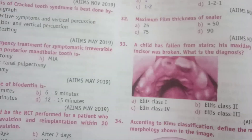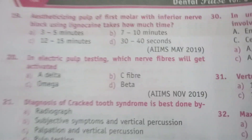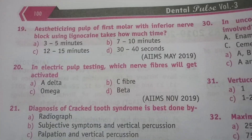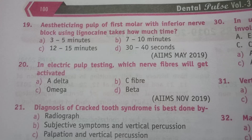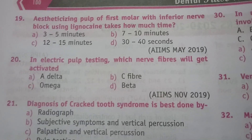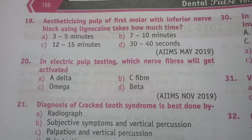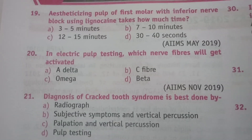Moving to the next page. Question 19: anesthetizing the pulp of the first molar with inferior alveolar nerve block using lignocaine takes how much time? The answer is C, 12 to 15 minutes.